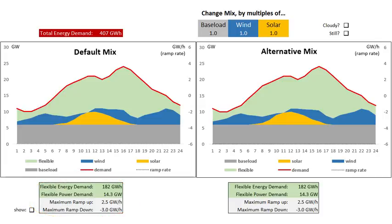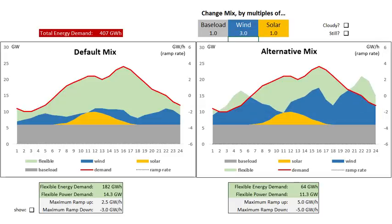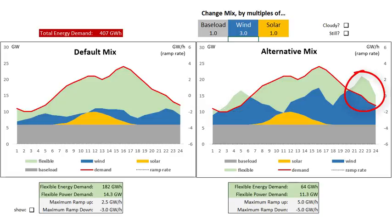Starting from that point, what happens if we start to change things? Something we might want to change is building out more wind capacity — let's say we treble the wind capacity in this particular system. By multiplying wind capacity by three, we've also trebled the power output at any point in time and over the day we've trebled the energy output. That's raised one issue: there are a couple of places in the early morning and late at night where we've now got an area of blue above the demand curve. In other words, at those times of day we've got too much wind.